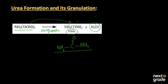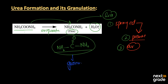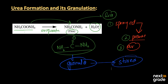After urea formation, the urea obtained is in liquid state. This liquid urea is sprayed from the top of a tower under high pressure, and a hot current of air is blown through it. As it passes through, it evaporates and forms granules. In this way, the urea is converted into granules, stored, and marketed. This process is known as the granulation of urea.